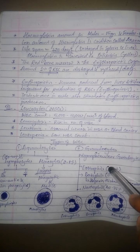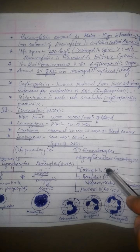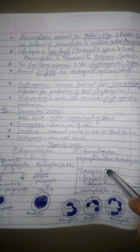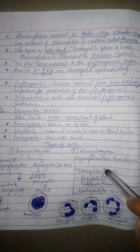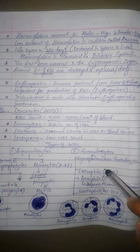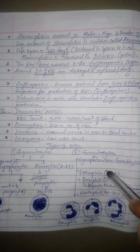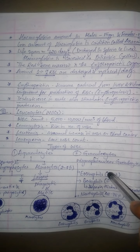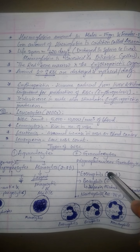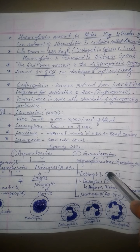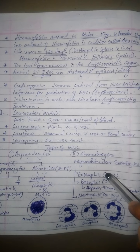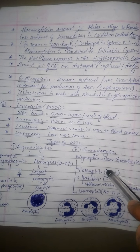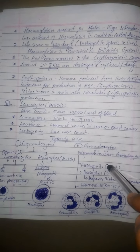Coming to the third component: leukocytes, also called WBCs. Their count is around 5,000 to 10,000 per cubic millimeter of blood. Leukocytosis is a rise in the number of WBCs. Leukemia is a condition related to abnormal increase in WBCs, also termed blood cancer. Leukopenia is a condition where the WBC count is less than normal.